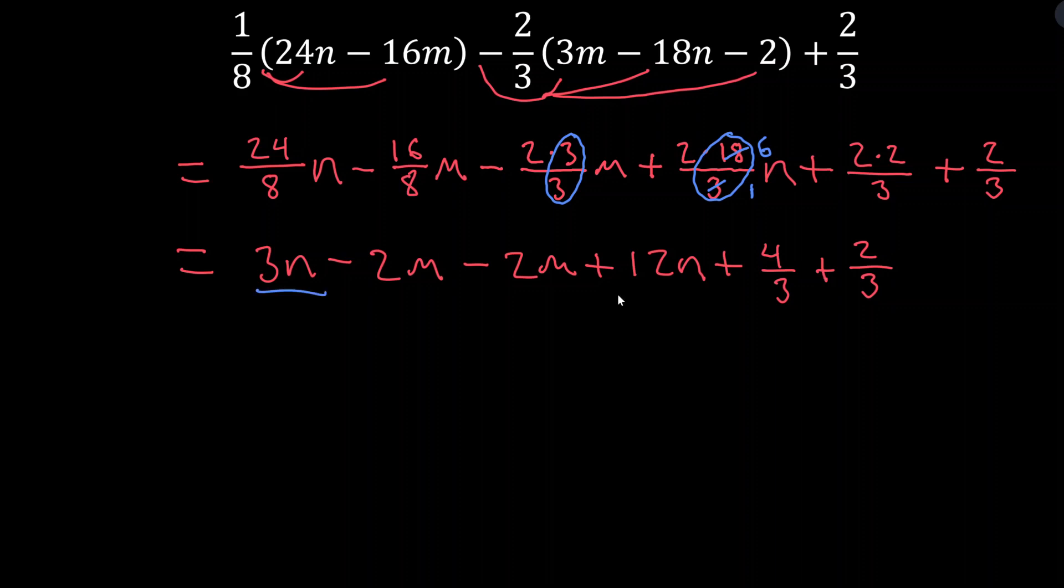So I'm just going to write the n terms first. So 3n plus 12n is 15n. Then I have 2 of those minus 2m's, so that's going to become minus 4m. Then I have plus, let's see, 4/3 plus 2/3. That's 6/3. But we can actually simplify this. 6/3 is the same as 2. So I'm just going to go ahead and write this as 2. And that is as simple as this expression can get. So hopefully you see that it's not too bad. I personally like writing out in this way, keeping them all as fractions. You can do whatever you want. As long as you get the right answer, whatever method works, works. Ask any questions below, leave a comment if you like, and keep flexing those brain muscles. I'll see y'all in the next video.